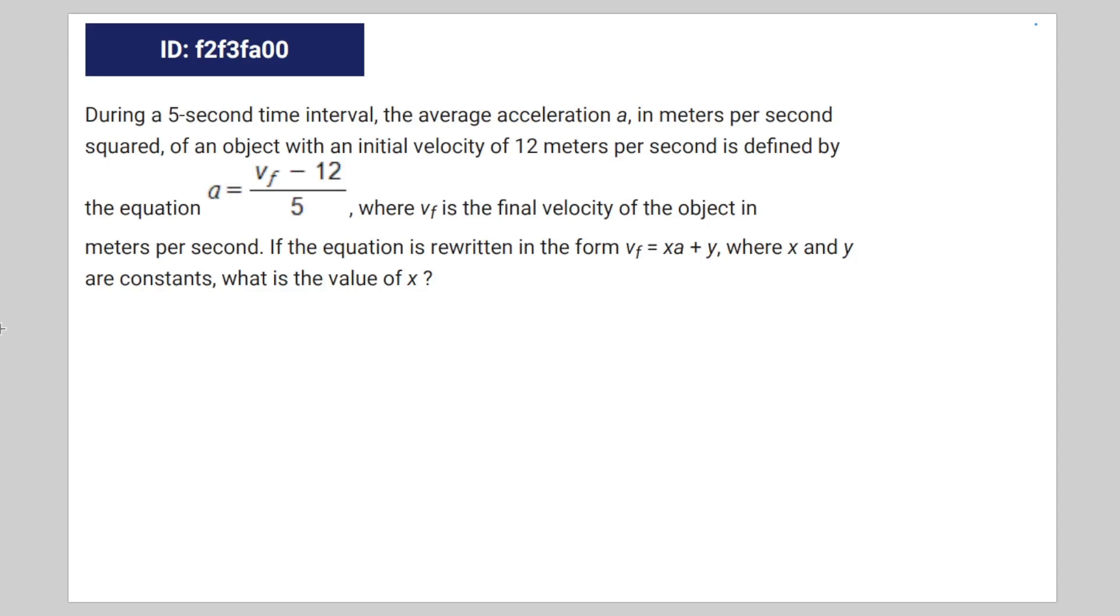So we're given the following math question. During a 5 second time interval, the average acceleration a in meters per second squared of an object with an initial velocity of 12 meters per second is defined by the equation a is equal to vf minus 12 divided by 5, where vf is the final velocity of the object in meters per second.